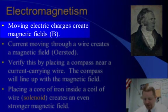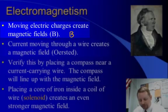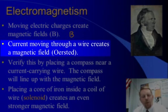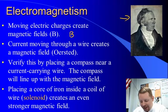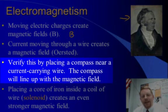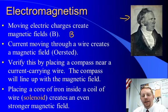Moving electric charges create magnetic fields, and the symbol for the magnetic field is a capital B. Current moving through a wire creates a magnetic field. This was discovered by Hans Christian Orsted, a Danish physicist, around 1820. You could verify this by taking a wire with current flowing through it and putting a compass near it. You'll see the compass move to line up with the magnetic field, because close to the wire, the magnetic field from the wire is actually stronger than Earth's magnetic field.